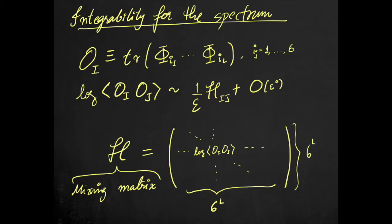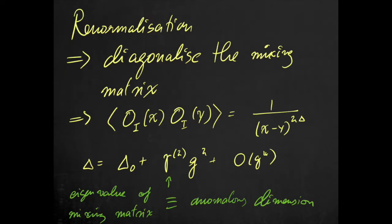Let's consider the spectral problem of N=4 super Yang-Mills in some more detail. Suppose we want to find the spectrum of a single trace of L real scalars in N=4 super Yang-Mills. In practice, we should first construct a 6^L by 6^L mixing matrix of overlaps between various such operators. Then one constructs renormalized operators by diagonalizing the mixing matrix. This gives quantum corrections to the scaling dimensions of the renormalized operators, called anomalous dimensions. The anomalous dimensions are nothing but the eigenvalues of the mixing matrix.